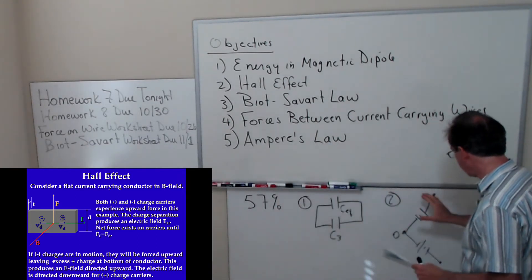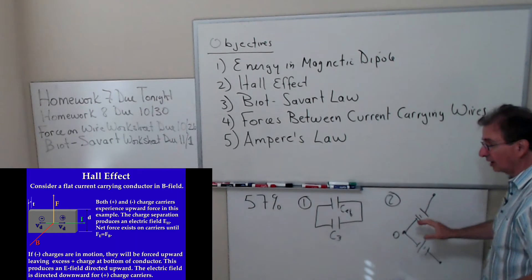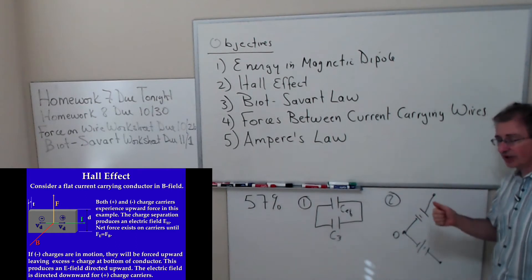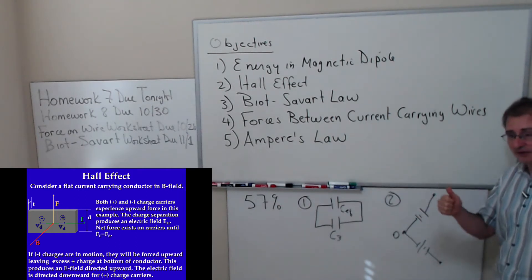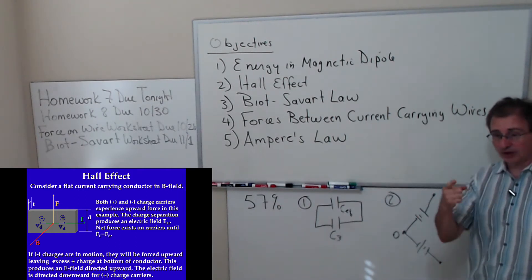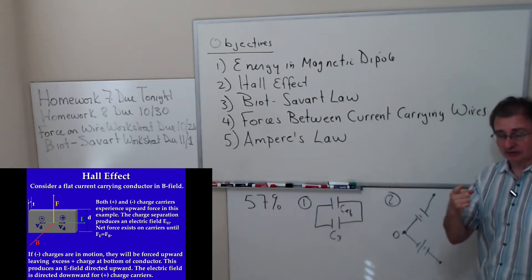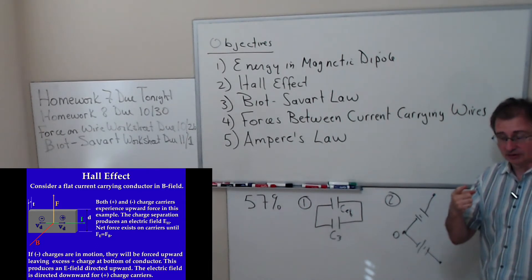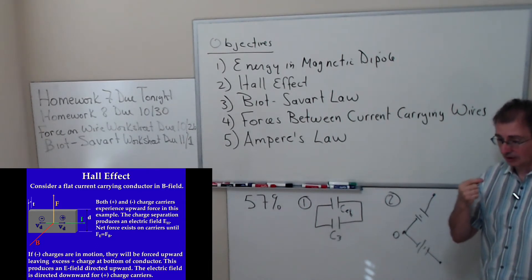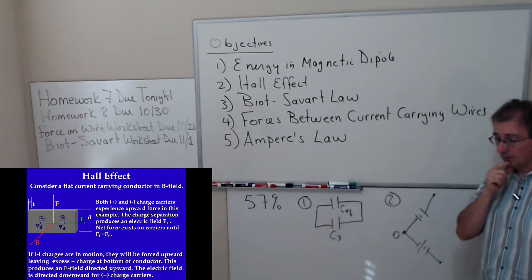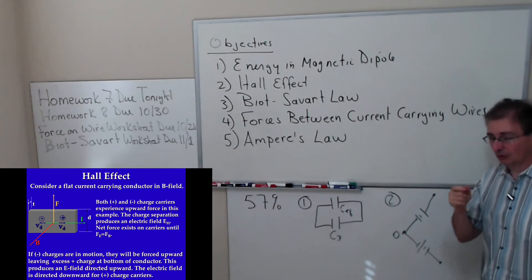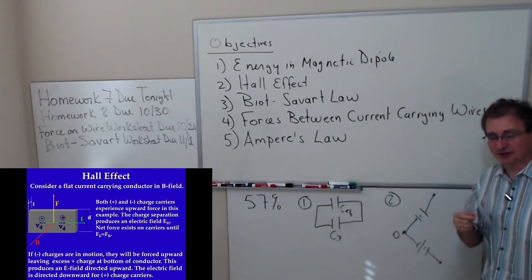So in this problem you need to set up Kirchhoff's laws so that you have one equation with one unknown for each loop. You should be able to do that.